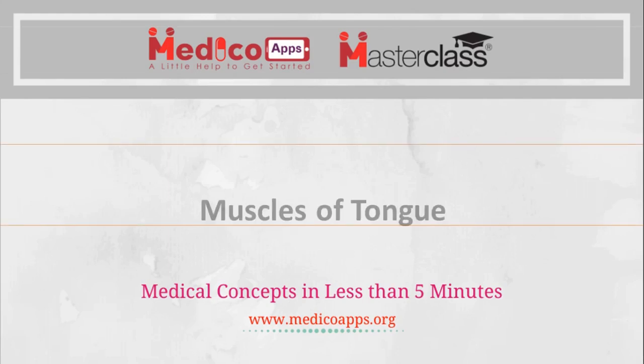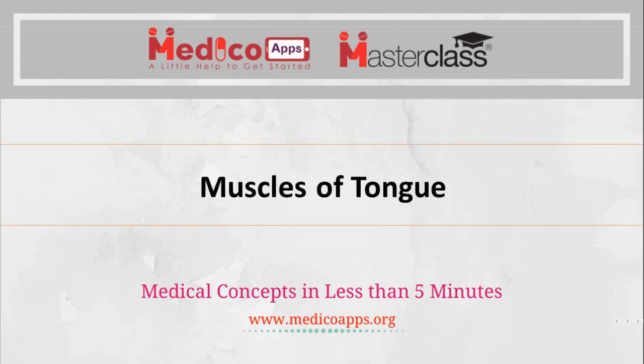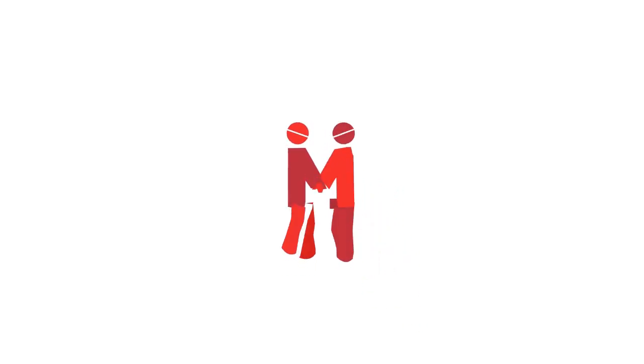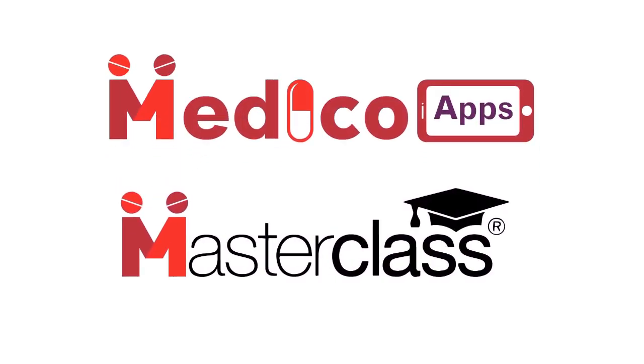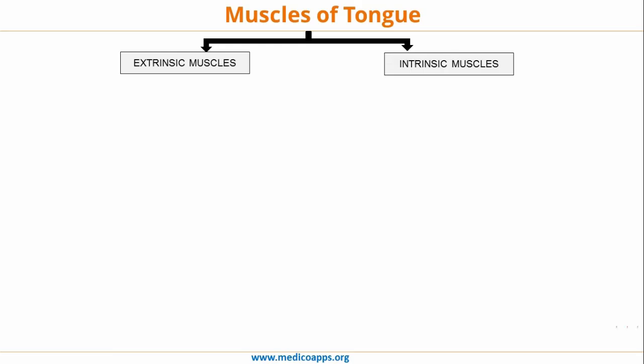In today's Medical Apps Masterclass, we will learn about the muscles of tongue. Muscles of tongue are divided into extrinsic group of muscles and intrinsic group of muscles. Extrinsic group of muscles have an attachment to a bone outside the tongue, whereas intrinsic group of muscles have their origin as well as insertion within the tongue.